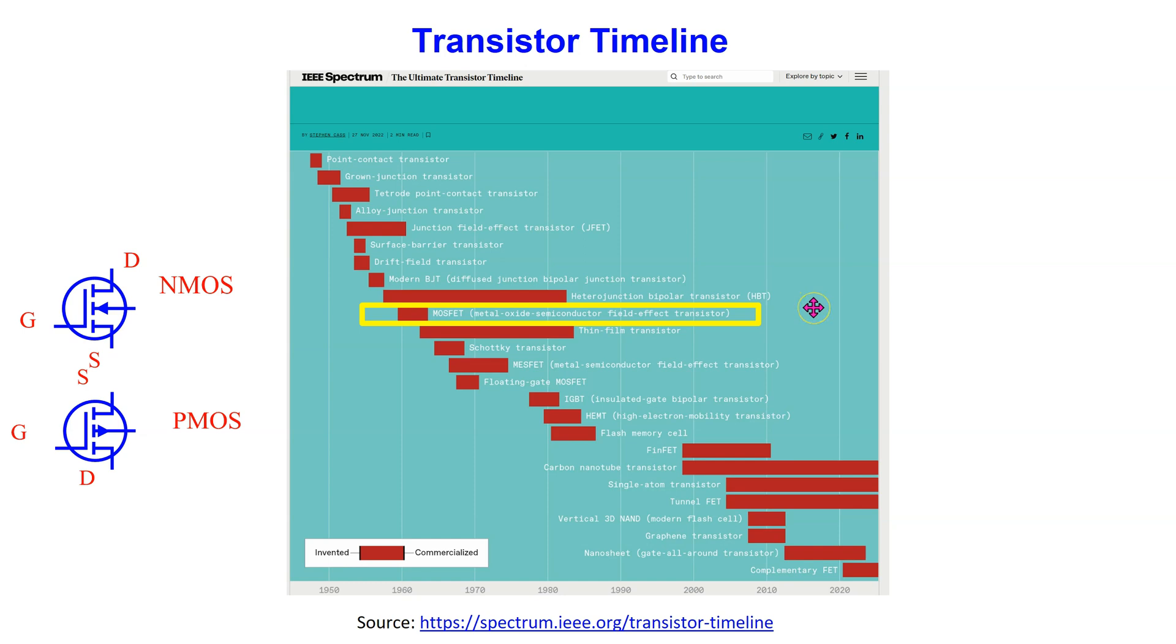The MOSFET is by far the most widely used transistor in digital integrated circuits such as memory chips and microprocessors. It is regarded as the most frequently manufactured artifact in human history.